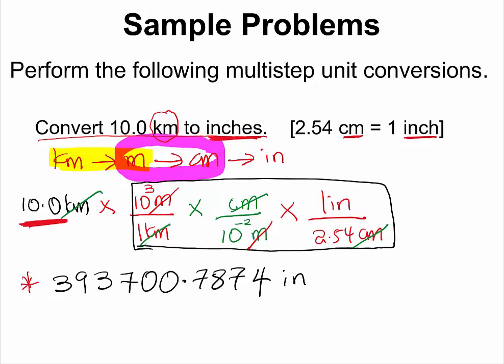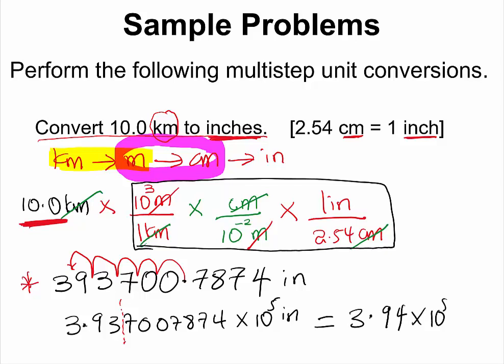The best way to do this is to first write the number in scientific notation and then round it. So this will become 3.9370078774 times 10 to the power of 5 inches, which can now easily be rounded to 3 significant figures to give 3.94 times 10 to the power 5 inches.